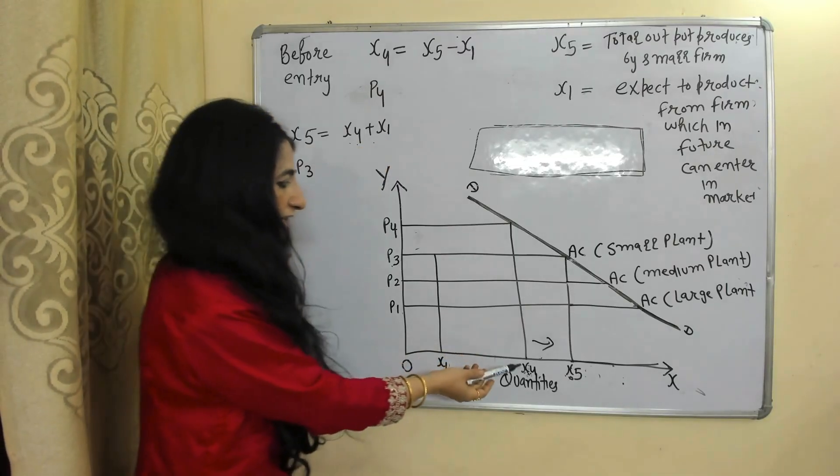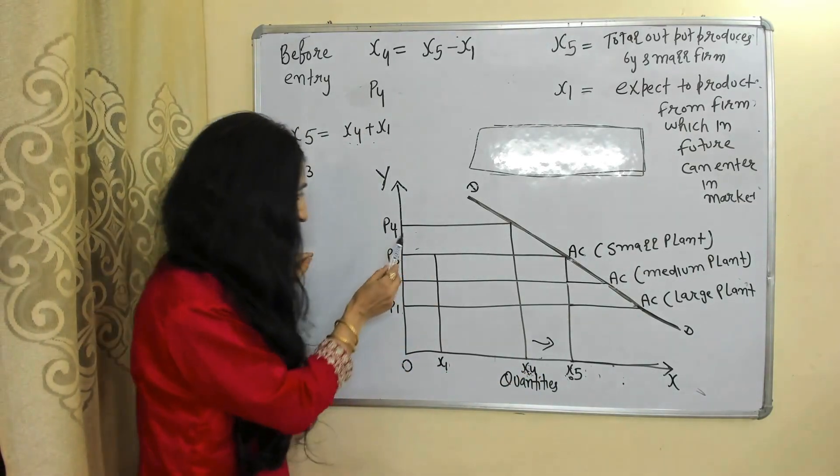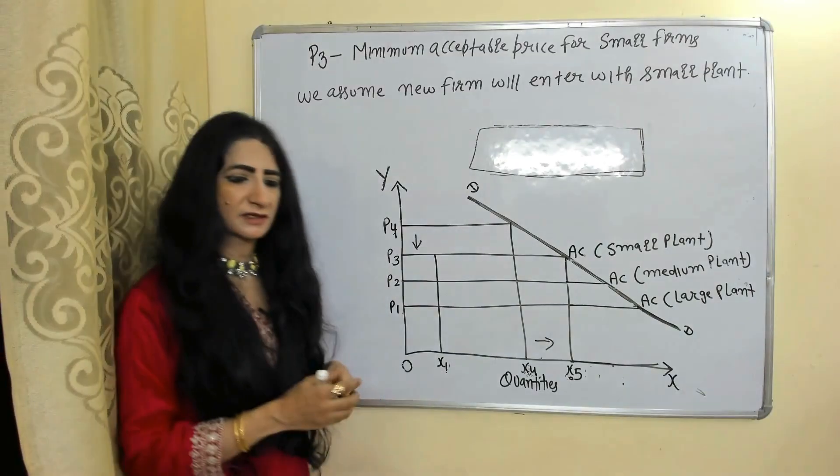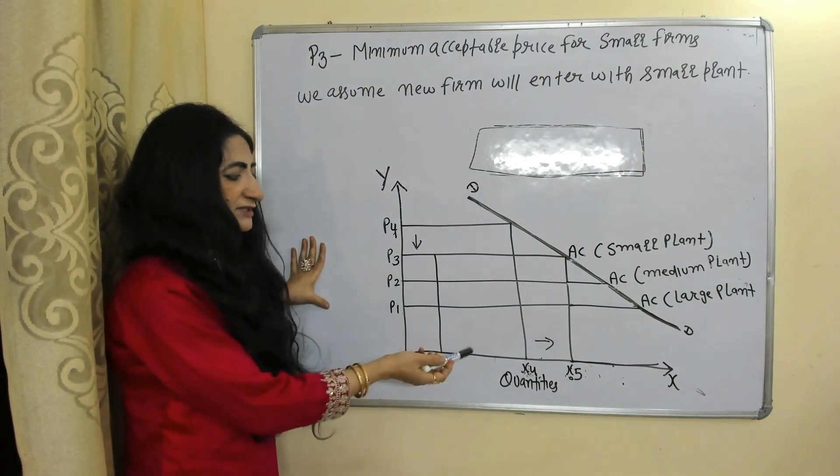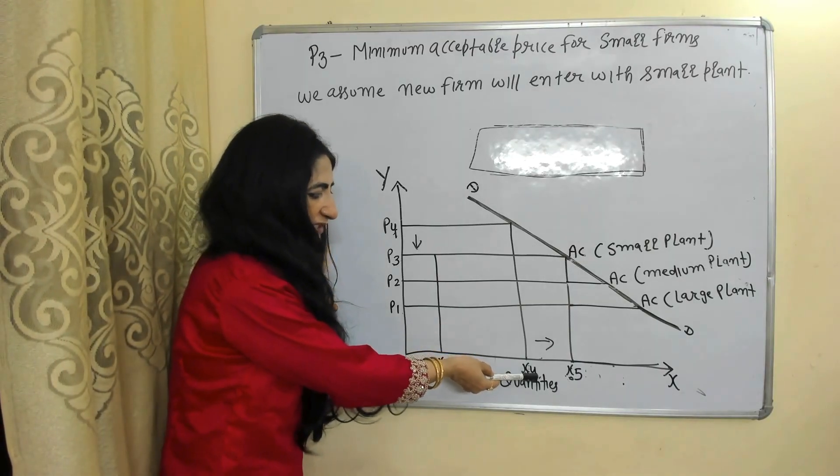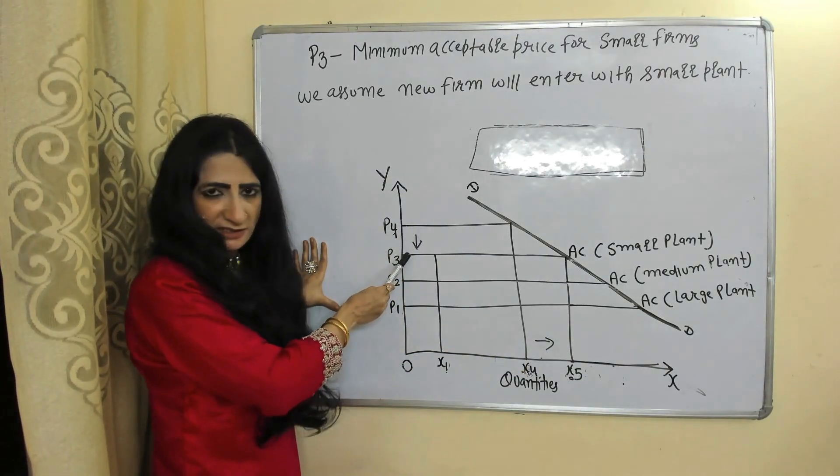X4 is our initial output and X1 is output which the new firm is currently producing in market. So as the new firm entered, output increased from X4 to X5 but price fell from P4 to P3. So here you can see as new firm entered the market, output increased from X4 to X5 and price reduced from P4 to P3.